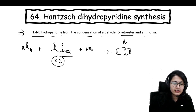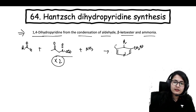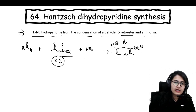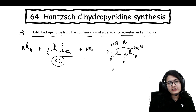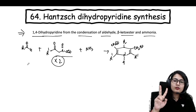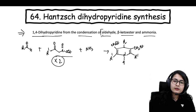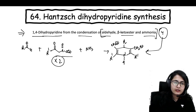In the product, the R group comes at the 4-position, and the ester groups come on either side. The nitrogen bears one hydrogen. This is your 1,4-dihydropyridine synthesis: one aldehyde, two molecules of beta-keto ester, one molecule of ammonia — four molecules giving you one product.